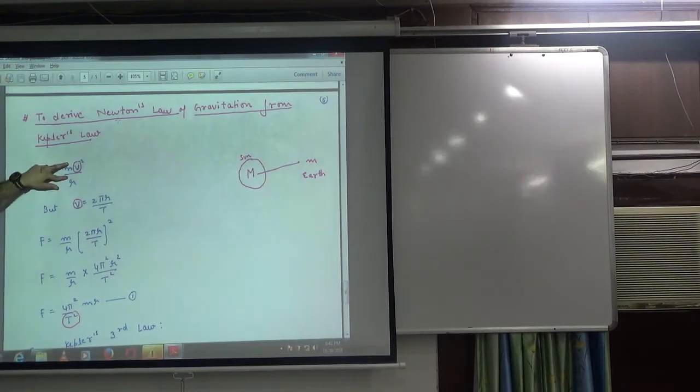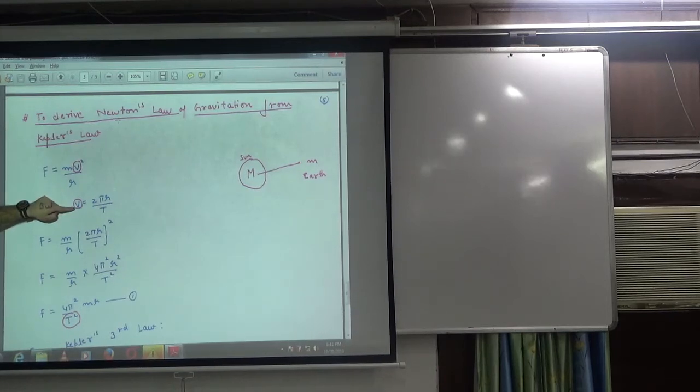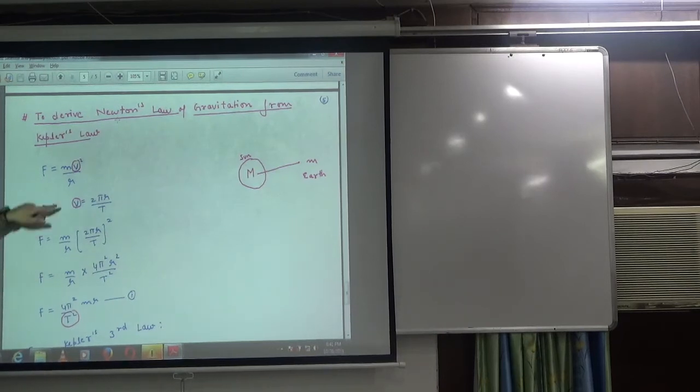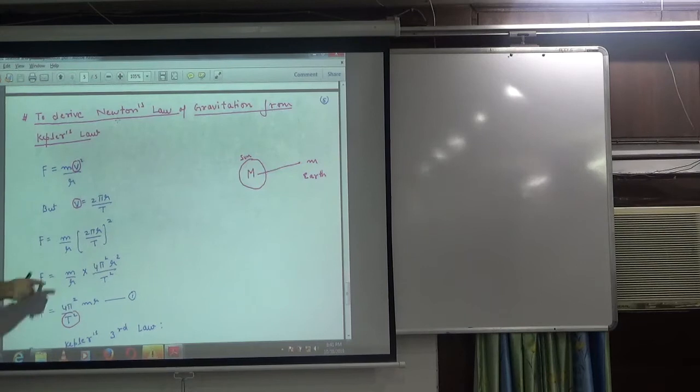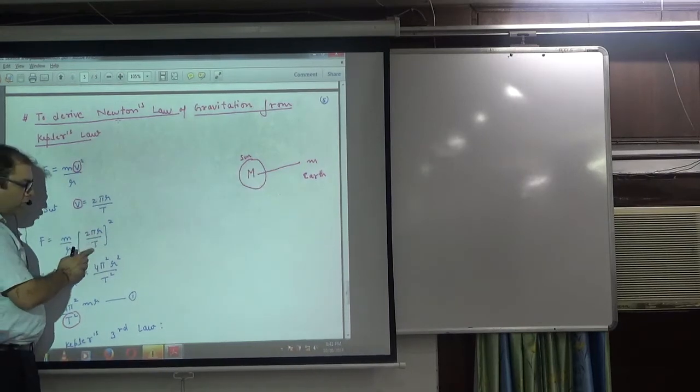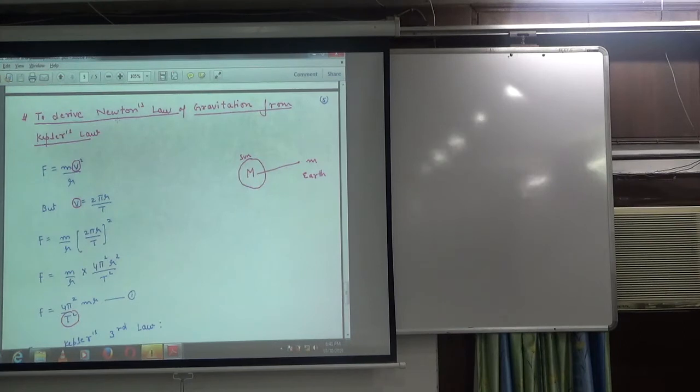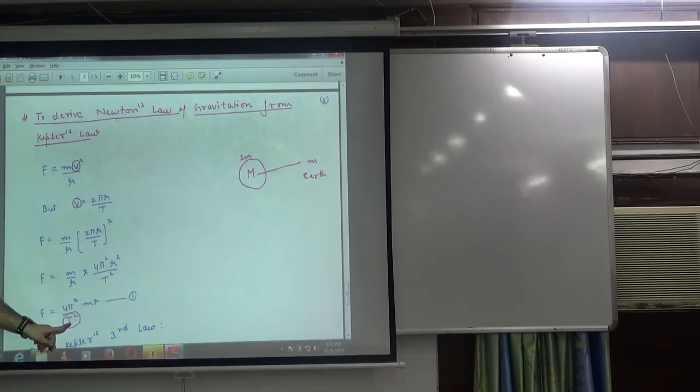The velocity of the planet in a circular orbit is 2πR/T, where T is the time period. Substituting this velocity into the force equation, we get F = m/R times 4π²R²/T². Simplifying, the denominator becomes T².